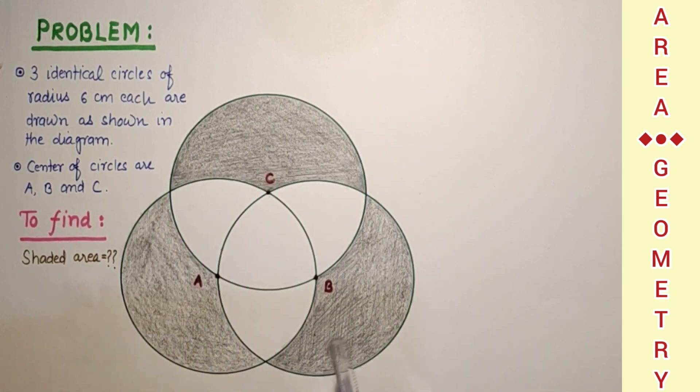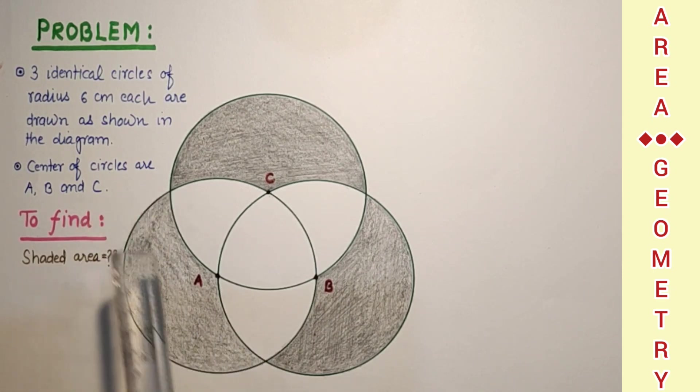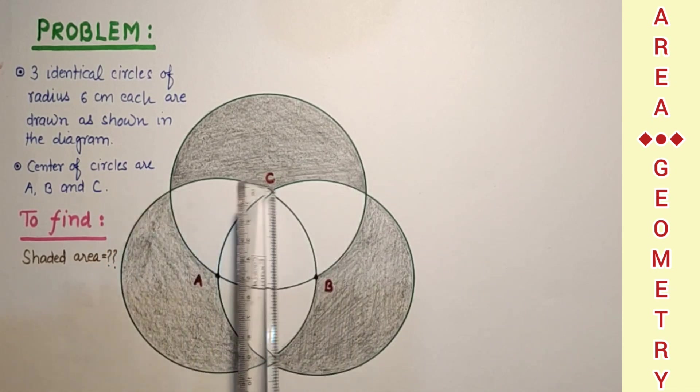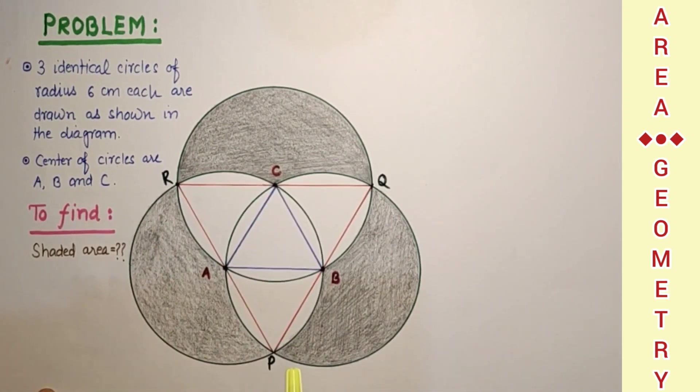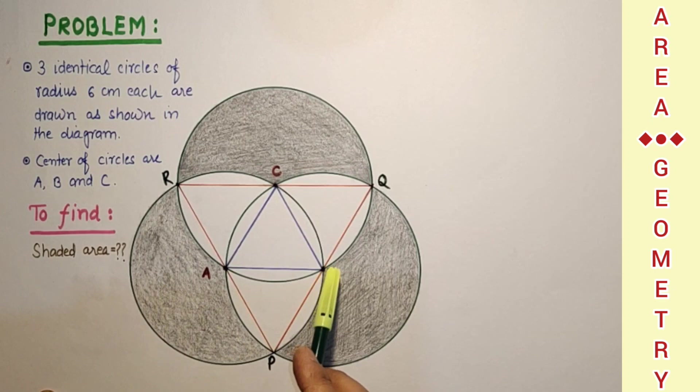So to get the area of the shaded portion, if we join these intersection points like this from here to here, from here to here, this point, this point and this point will be collinear. And the triangle so joined will be an equilateral triangle. Let this point be P, Q, R. These points of intersection of circles. And P, R, P, Q and Q, R are joined which passing through points A, B and C.